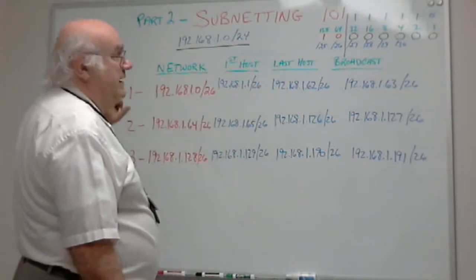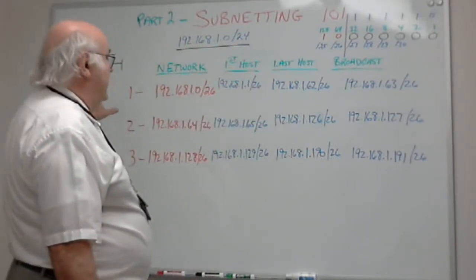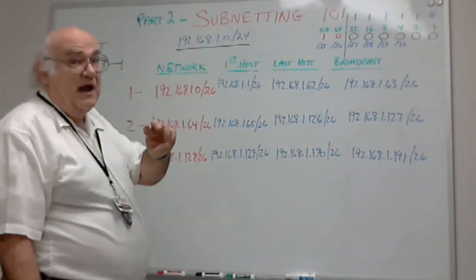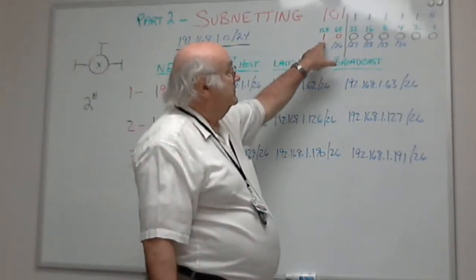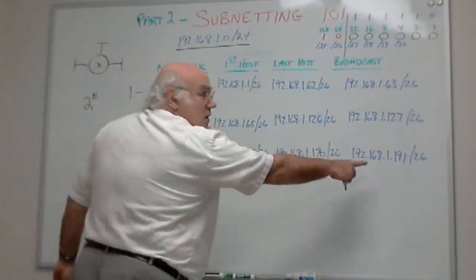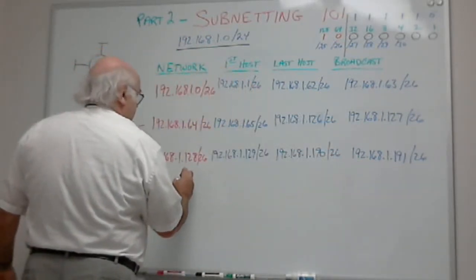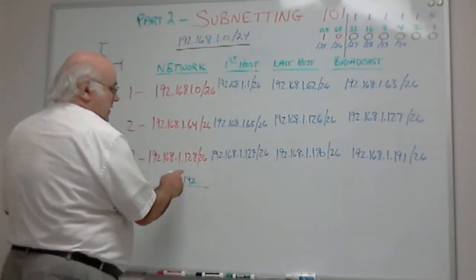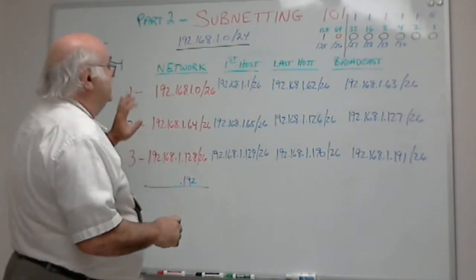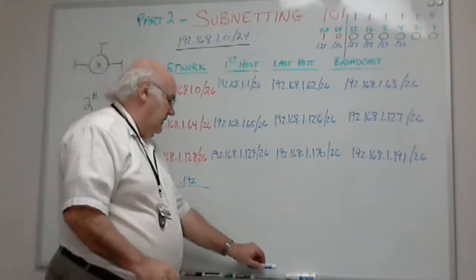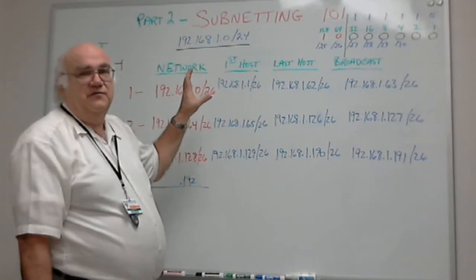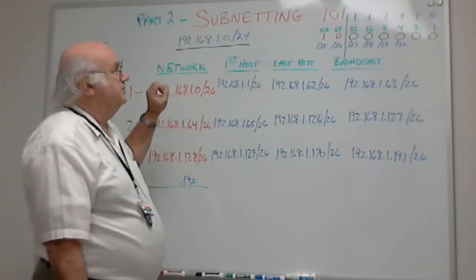There — all the work is done for my three networks, using two stolen bits. I do have a fourth possible network: turning both subnet bits on gives 192.168.1.192, but I don't need that network, so it's just sitting there for future use. In the next video we're going to look at how to develop a system for doing this very quickly.